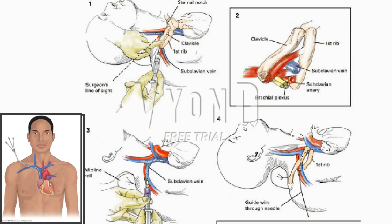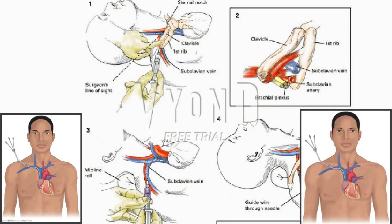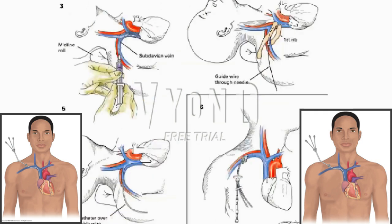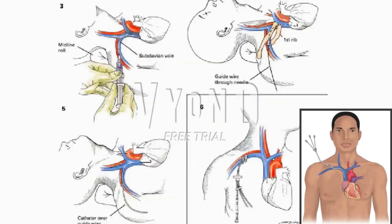A flexible guidewire is inserted into the needle (Figure 4). If any arrhythmia is noted, the wire is withdrawn until the electrocardiogram returns to its usual pattern. The position of the wire is fluoroscopically verified. The triple-lumen catheter is threaded over the guidewire (Figure 5). Topical antiseptic and a dry sterile dressing are placed over the entrance site. The catheter hub and wings are secured to the chest skin with fine non-absorbable sutures (Figure 6). A chest X-ray is obtained to verify the position of the catheter and exclude complications such as a pneumothorax.